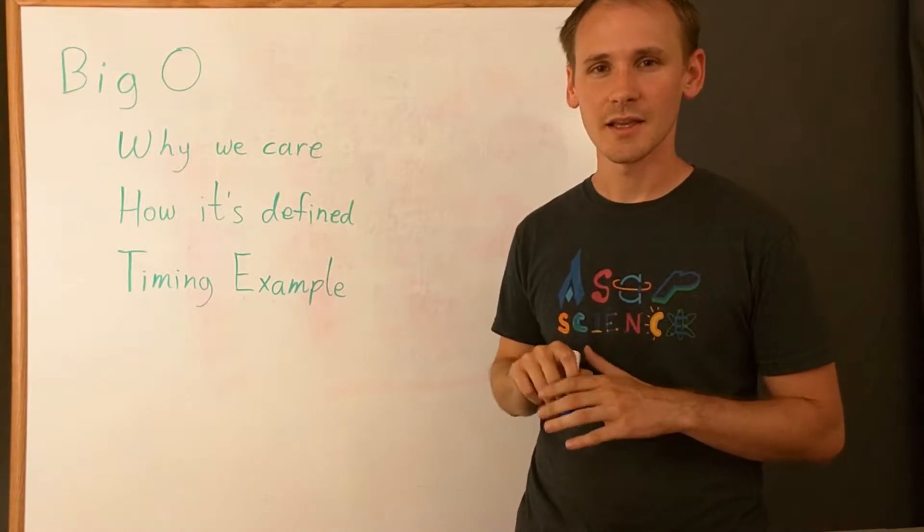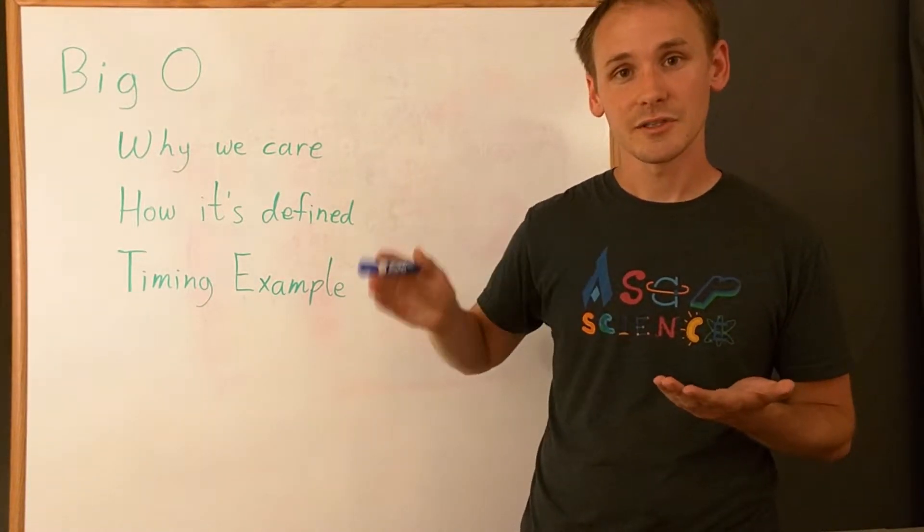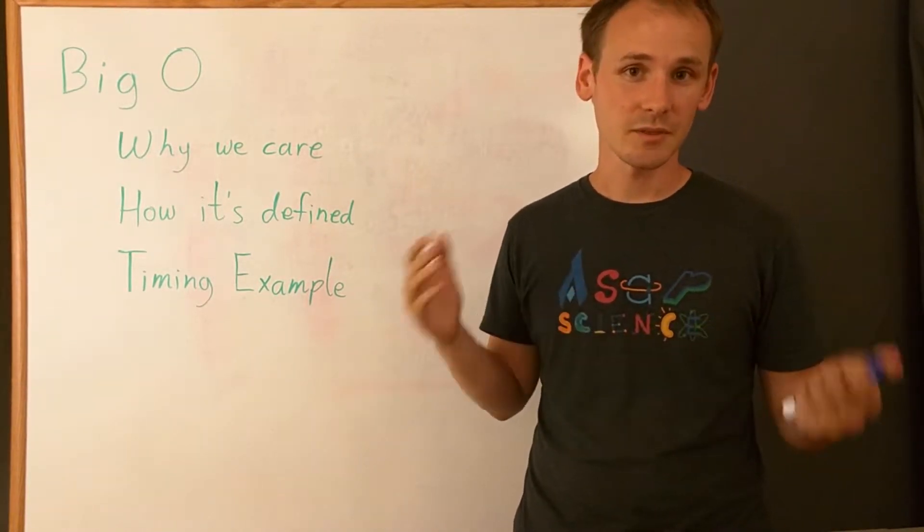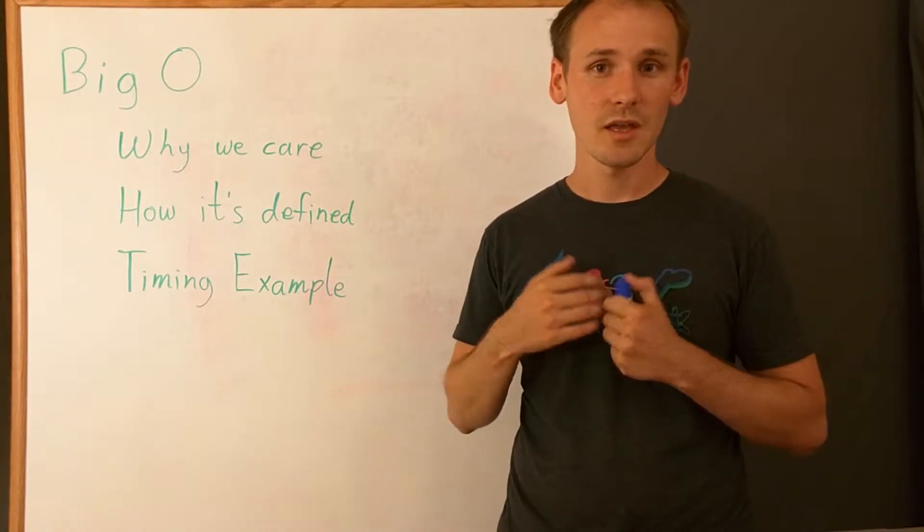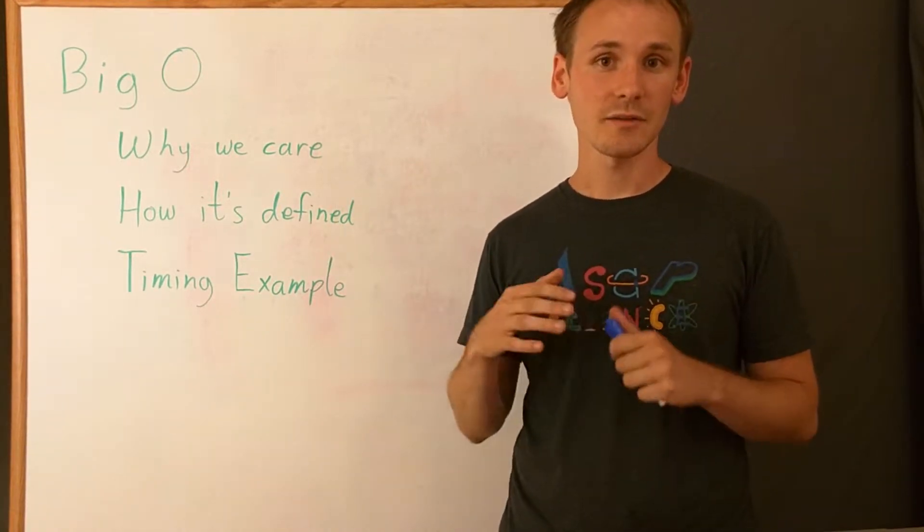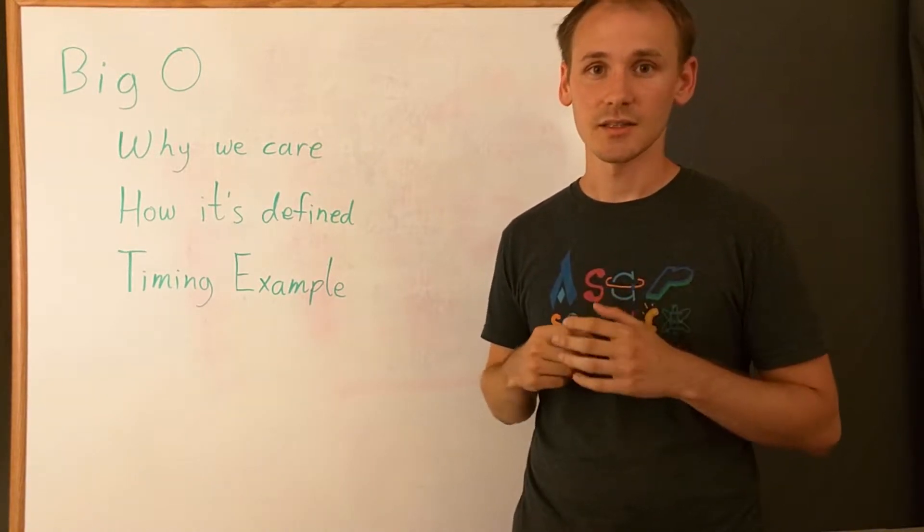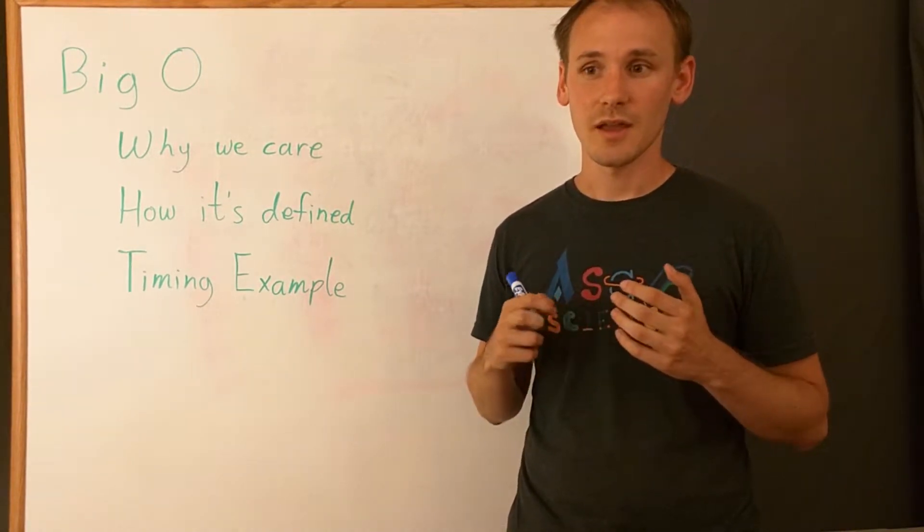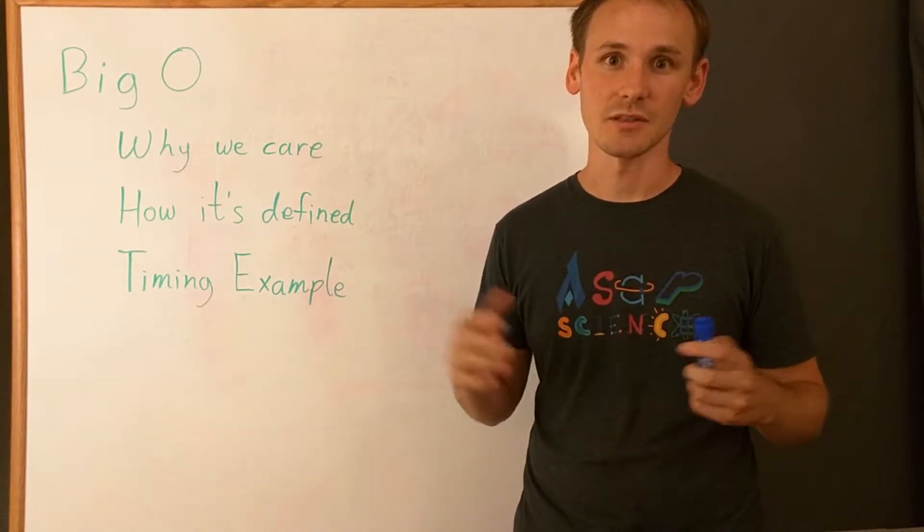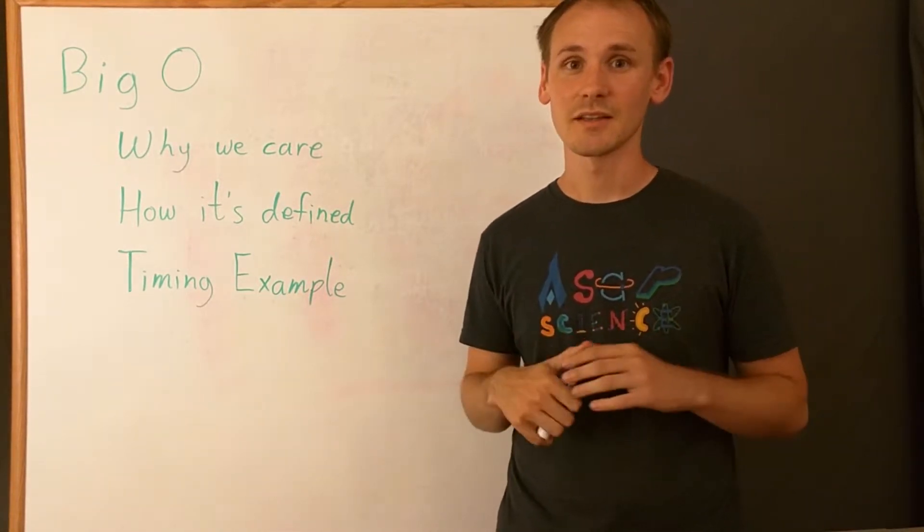So one approach you can take to that is just looking at every single word one at a time, but that's really slow because if we have twice as many words, now it's going to take about twice as long because I have to look at twice as many words. Similarly, if I had ten times as many words, it would take ten times as long. But we can do better than that.